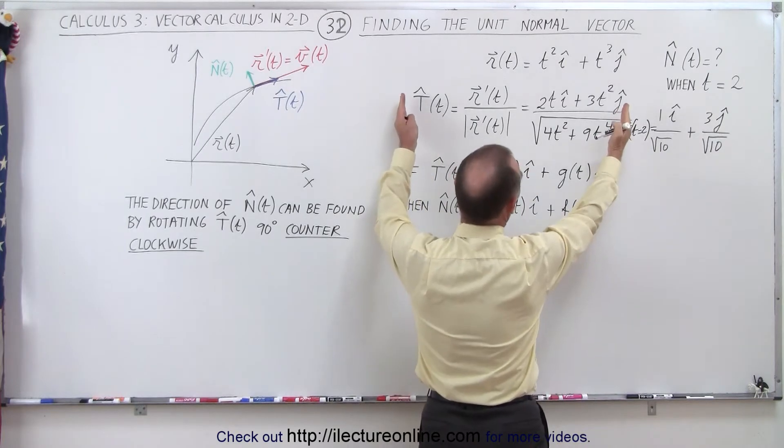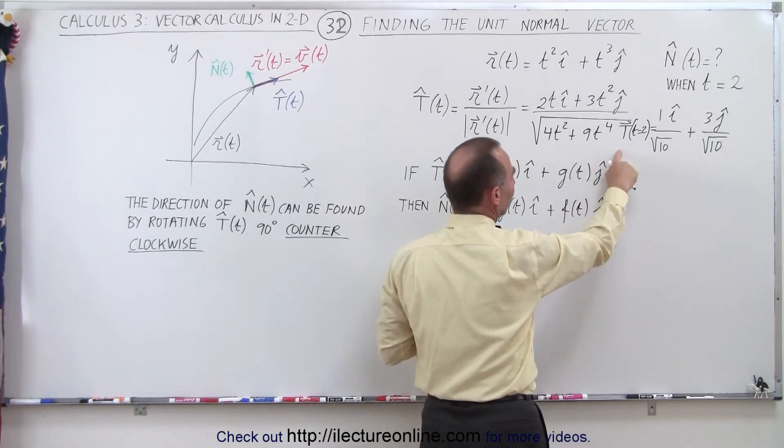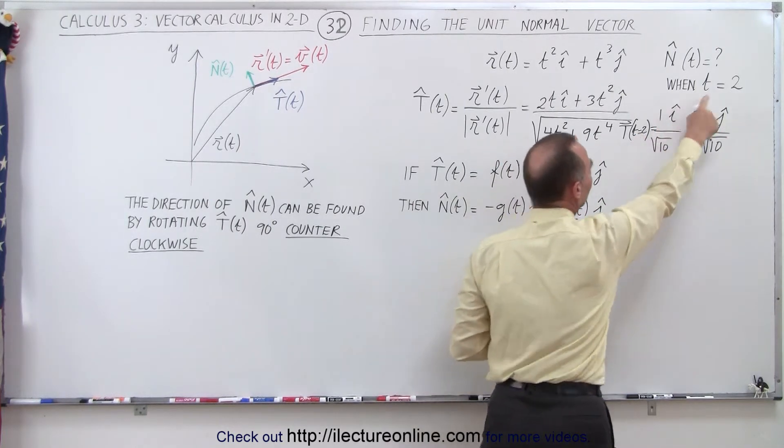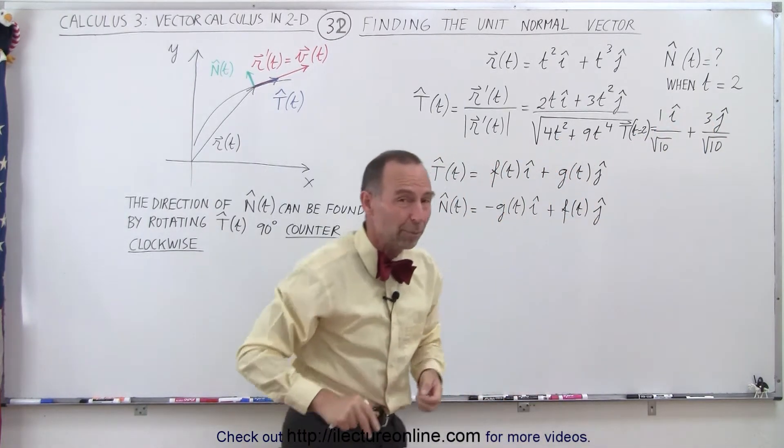This is the general form of the unit tangent vector. This is the specific form when t equals 2, which is what we found in the previous video.